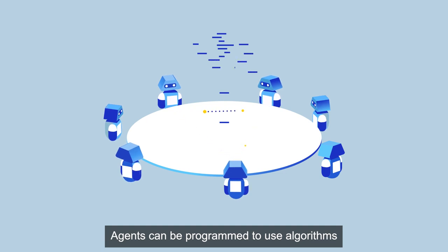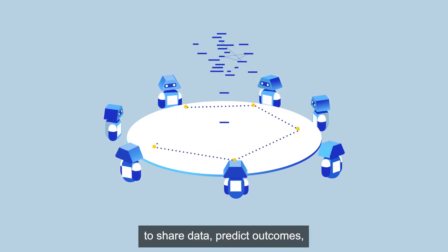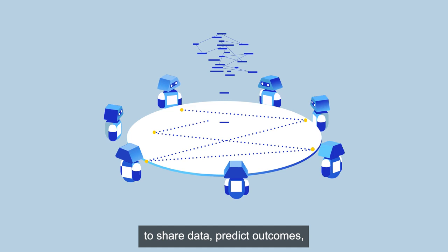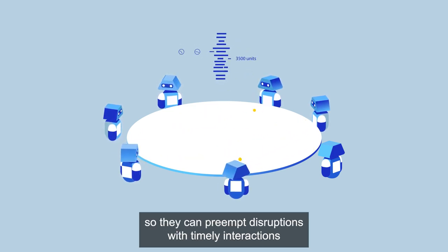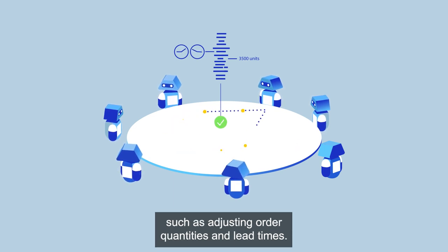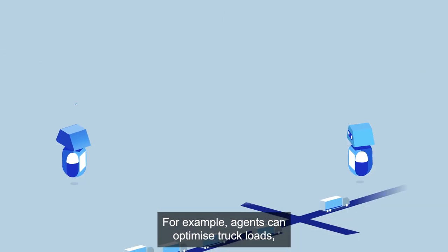Agents can be programmed to use algorithms to share data, predict outcomes, and even negotiate with other agents so they can pre-empt disruptions with timely interactions such as adjusting order quantities and lead times.